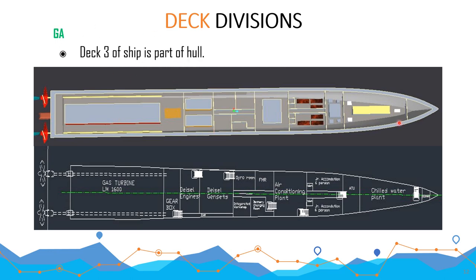This is deck number 3. It contains the chilled water plant, sea air conditioning system, gyro room, diesel gensets, and engines. This is the gas turbine region and the gearbox region. The stairs here indicate whether you can come into this deck or go above it. This is the overall arrangement of deck 3.